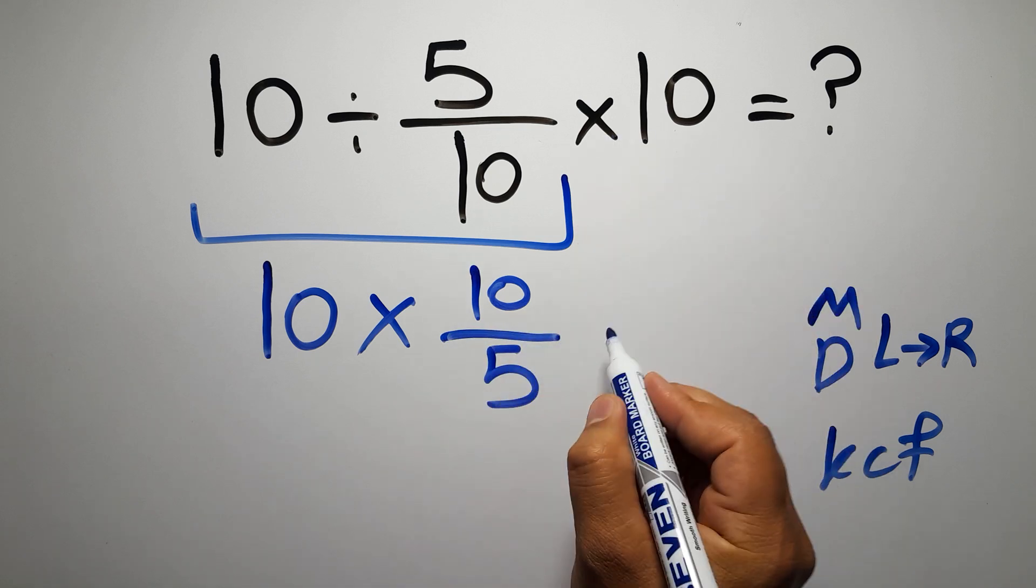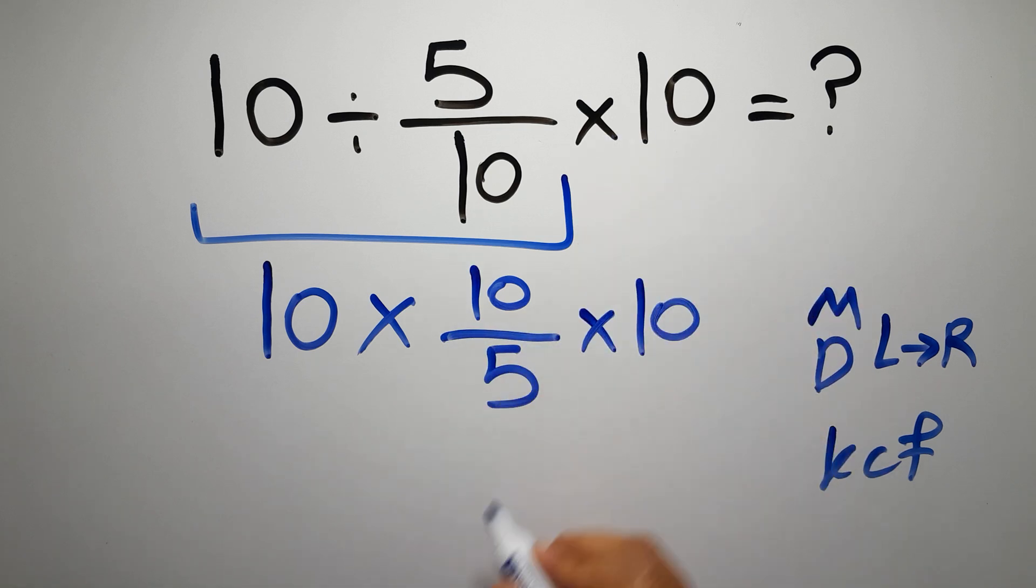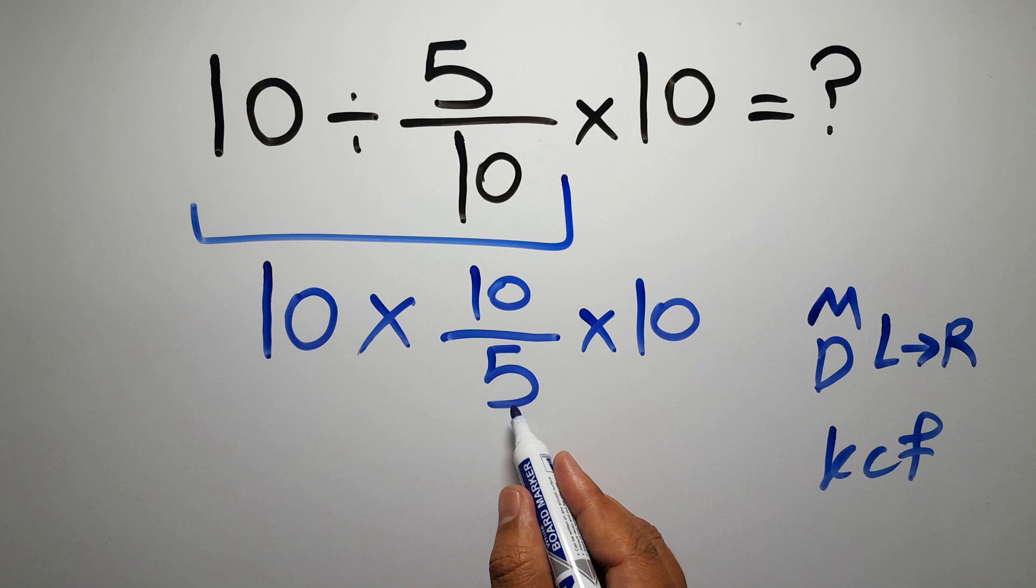And here we have times 10. So 10 times 10 over 5, then times 10. 10 over 5 equals 2.